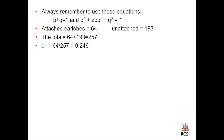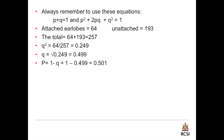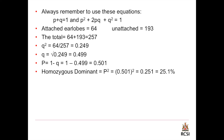To get q, we square root q squared, which gives 0.499. Since p plus q equals 1, p equals 1 minus q, which equals 0.501. To get the homozygous dominant we square p: p squared equals 0.251.